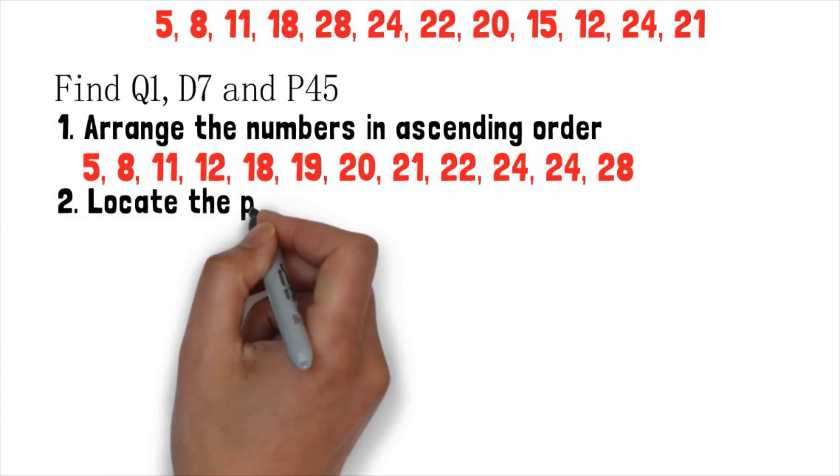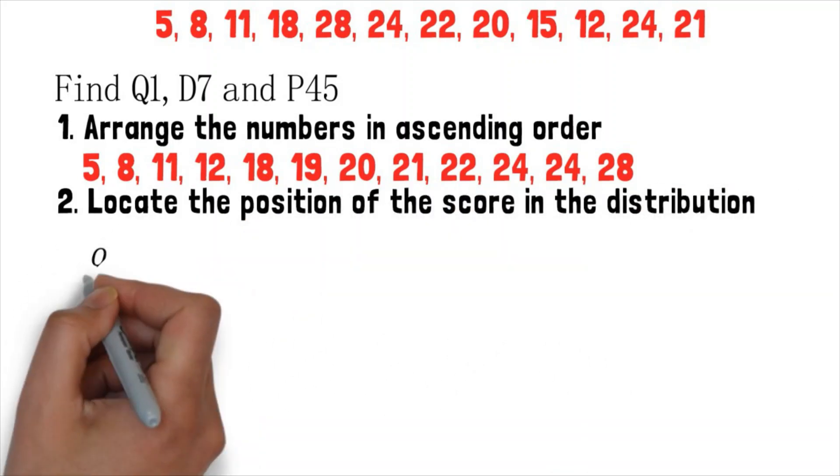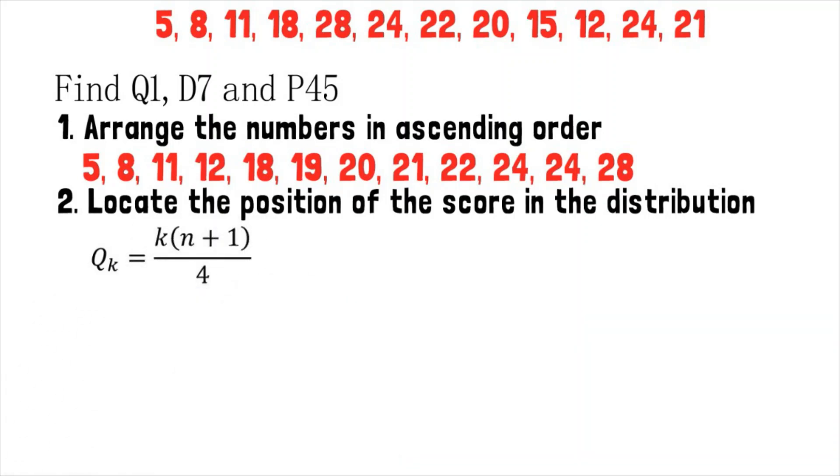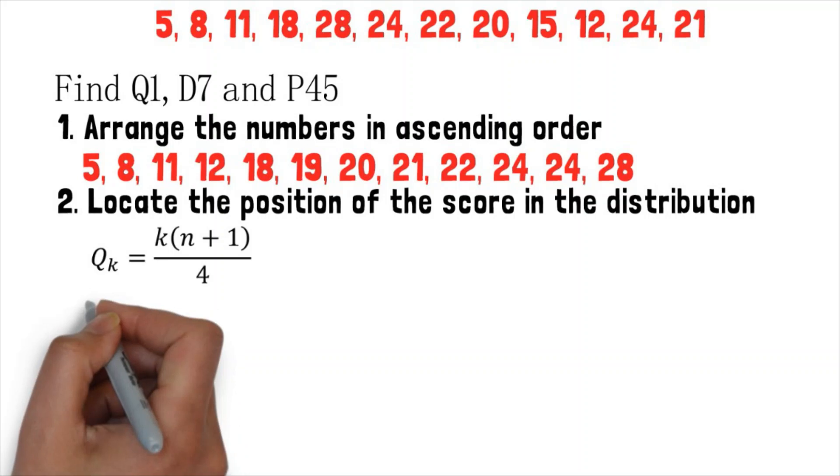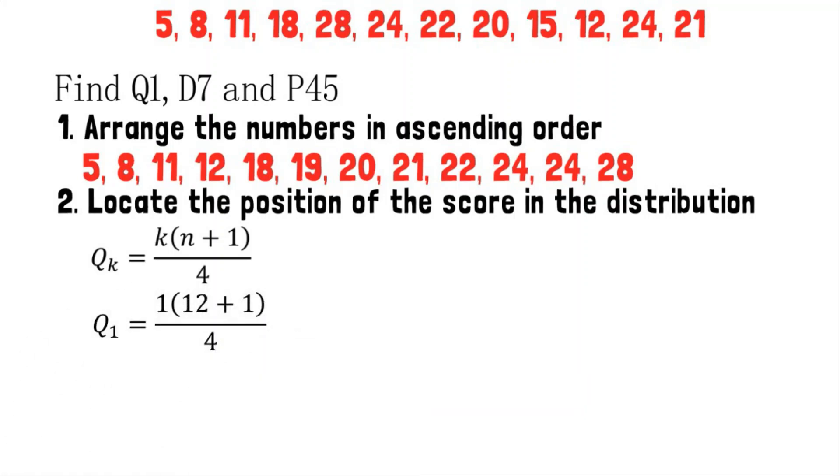Q sub k equals k times the quantity n plus 1 divided by 4. All we have to do is substitute the value of k which equals 1 since we're looking for Q1, and substitute the value of n which equals 12 since there are 12 data in the distribution. That gives us Q sub 1 equals 1 times the quantity 12 plus 1 divided by 4.